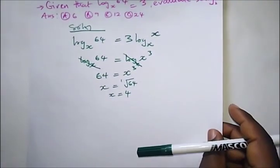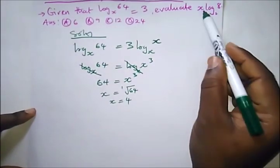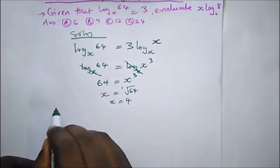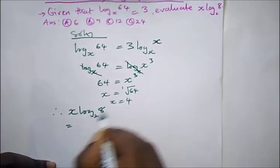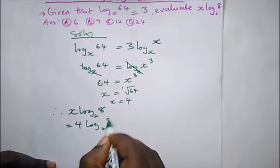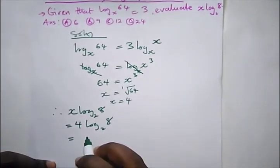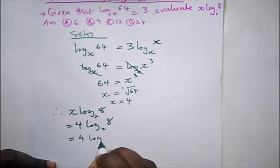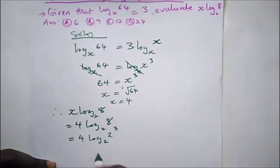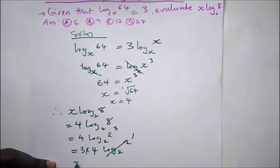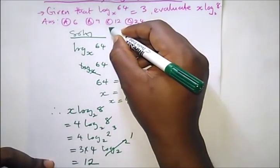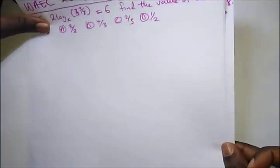The question asks us to evaluate x·log_2(8). Since x = 4, we have 4·log_2(8). We convert: 8 = 2^3, so this becomes 4 × 3·log_2(2). Since log_2(2) = 1, we're left with 3 × 4 = 12. The correct option here is option C.